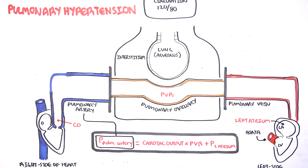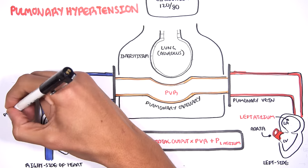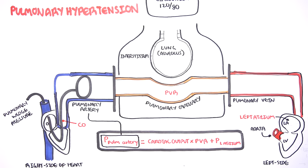To help diagnose pulmonary hypertension, you perform a right-sided cardiac catheterization. If the value is above 25 mmHg at rest, it is diagnostic of pulmonary hypertension. You can also use a transthoracic echocardiogram to help diagnose it. The pulmonary wedge pressure can help assess the left side of the heart.